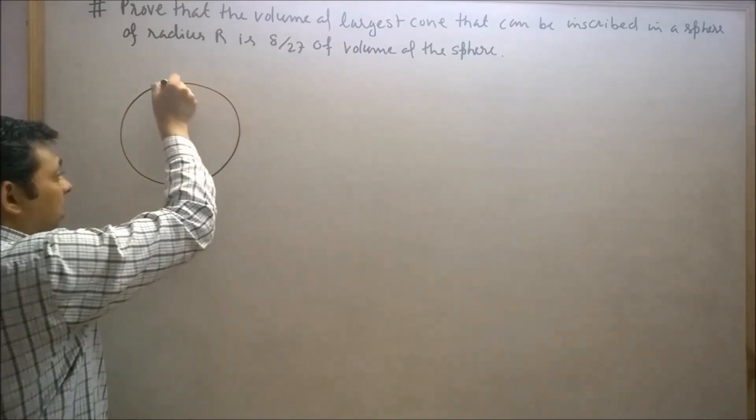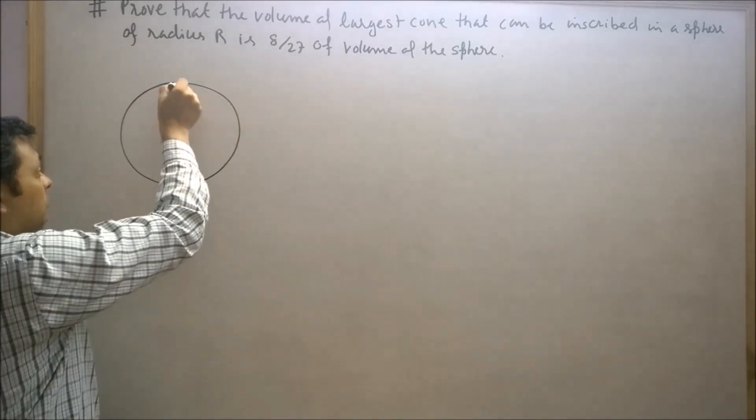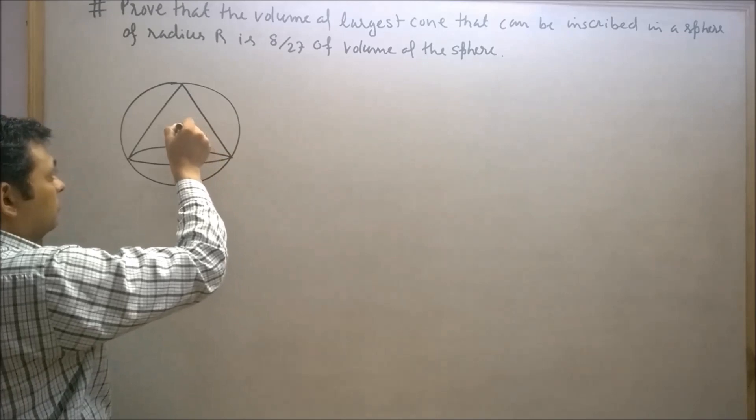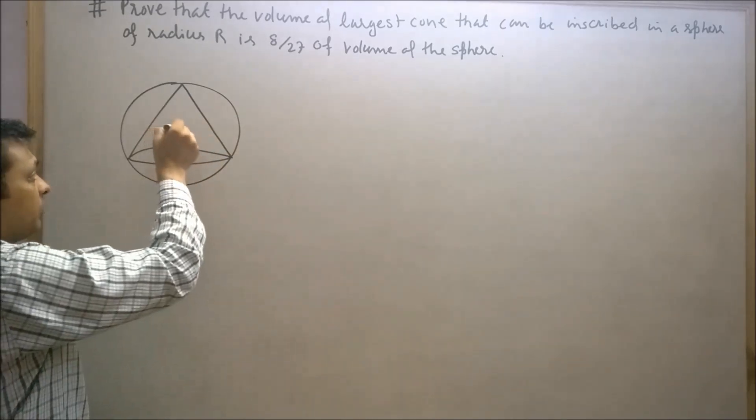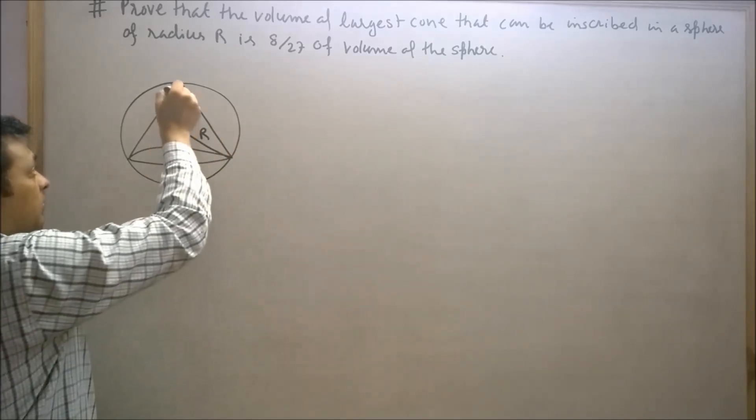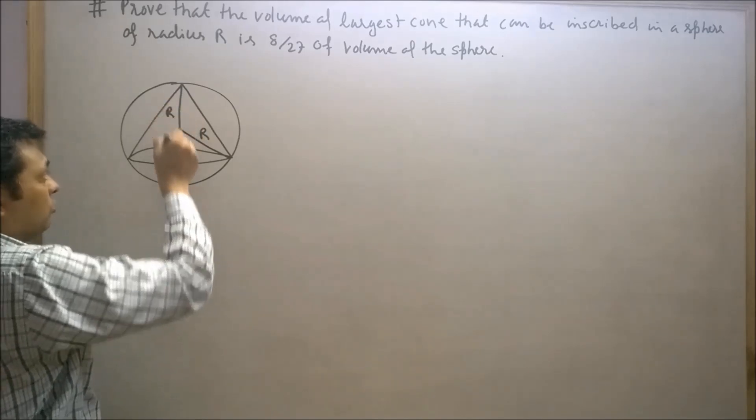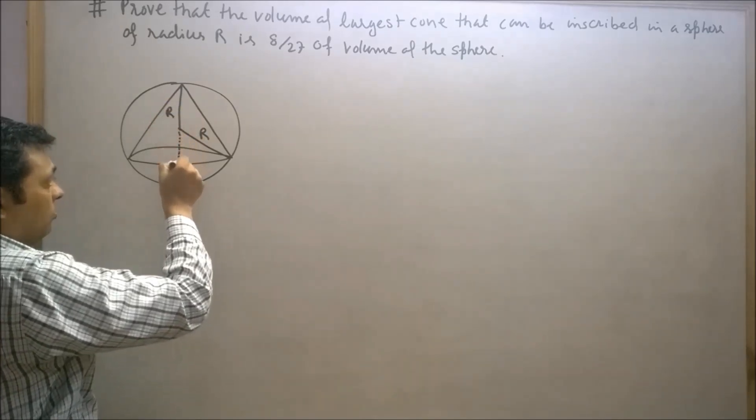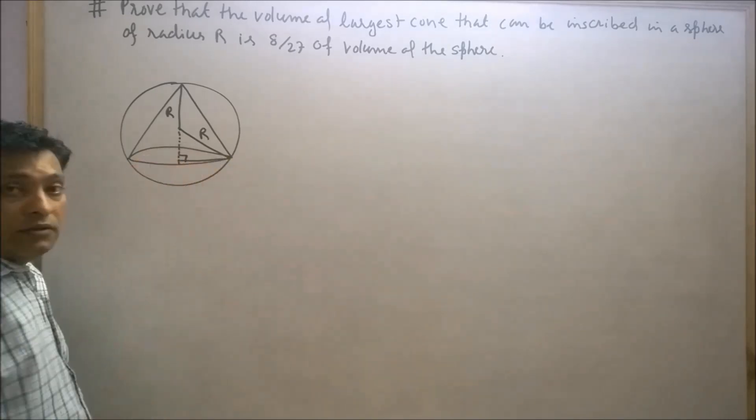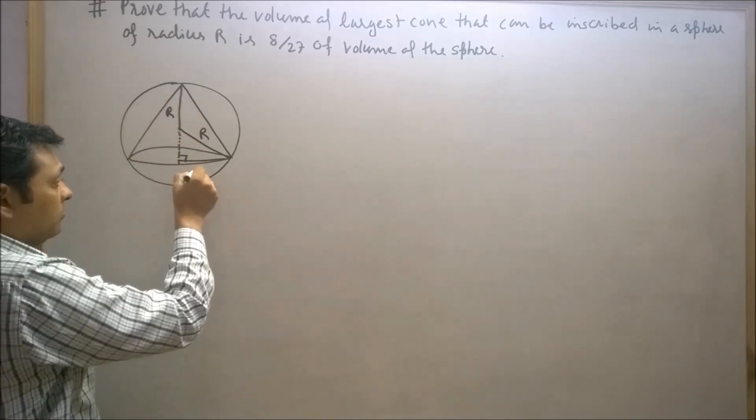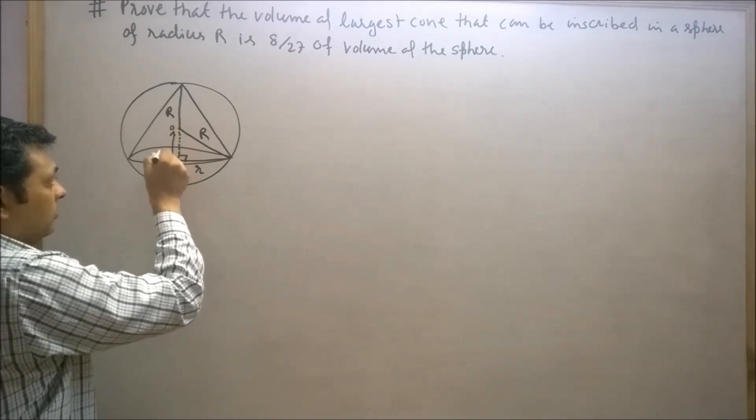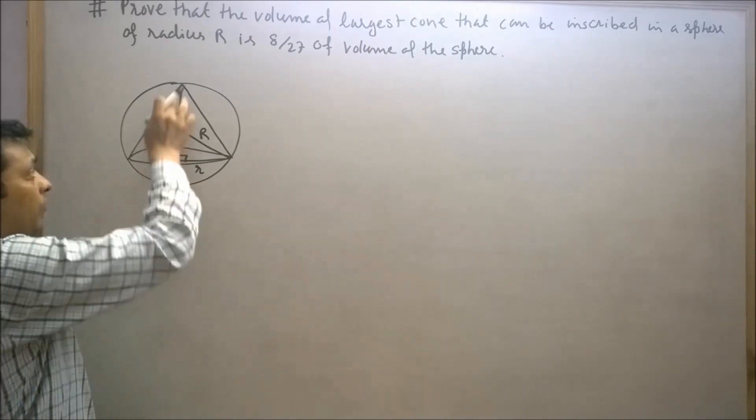Let's draw the diagram for this question. Let's say this is the center of the sphere and the radius of the sphere is given by R. This will also be R. Now drop a perpendicular on the radius so that the radius of the cone is small r and this is x.